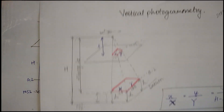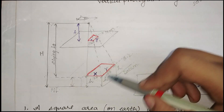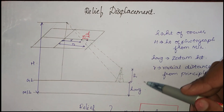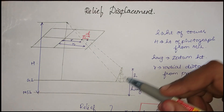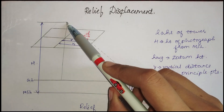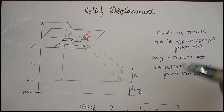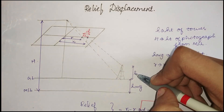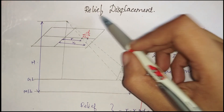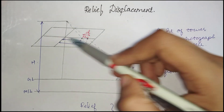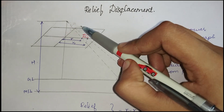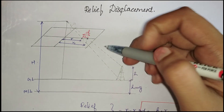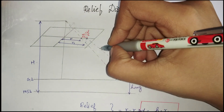Next is relief displacement. In vertical photogrammetry there is no parameter indicating the height of a photographed object. In relief displacement — also a vertical photograph — the height of the object is included. Consider a tower of height h being photographed from a plane. The principal point is the center, and r and r1 are the radial distances from it.